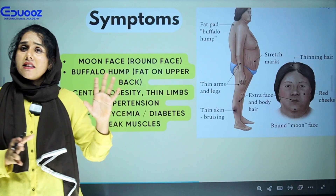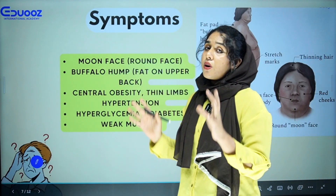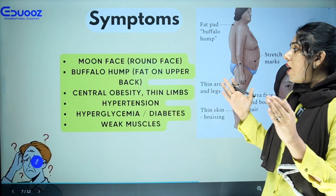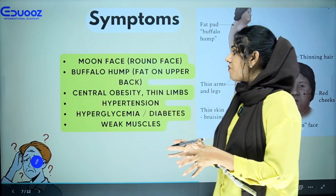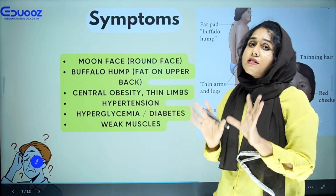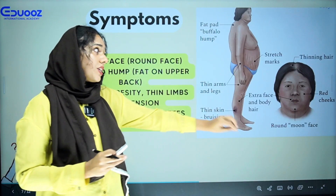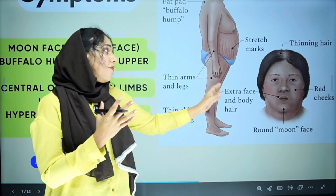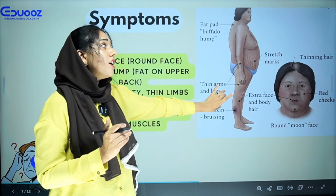Additional symptoms of Cushing syndrome include moon face — a round, puffy face with extra fat. There is also a buffalo hump with fat deposition in the back. Other features include hypertension, hyperglycemia, diabetic weak muscles, and thinning of hair. These are the features of Cushing syndrome, caused by excess cortisol secretion.